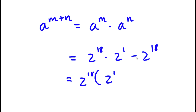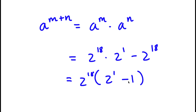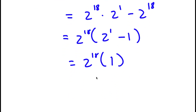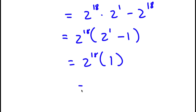From here, I can factor out 2 to the power of 18. So I have 2 to the power of 18 times 2 to the power of 1, and negative 2 to the power of 18 divided by 2 to the power of 18 is simply negative 1. So this is 2 to the power of 18 times 2 minus 1, which is 2 to the power of 18 times 1, equal to 2 to the power of 18.